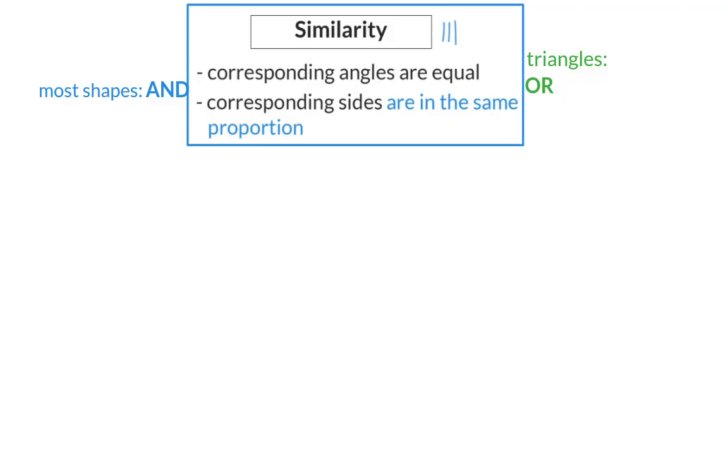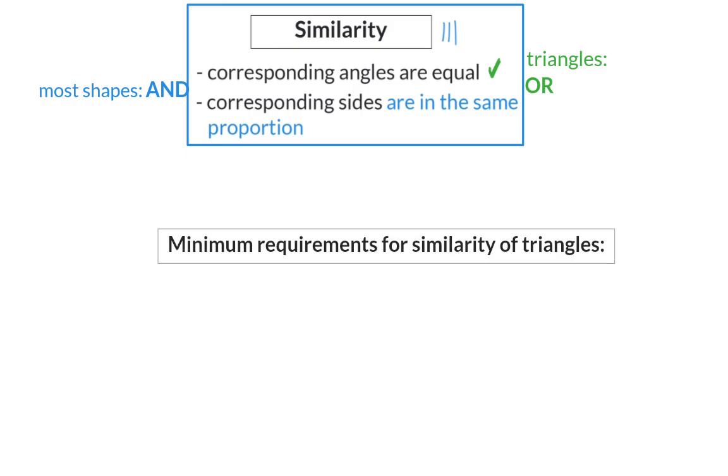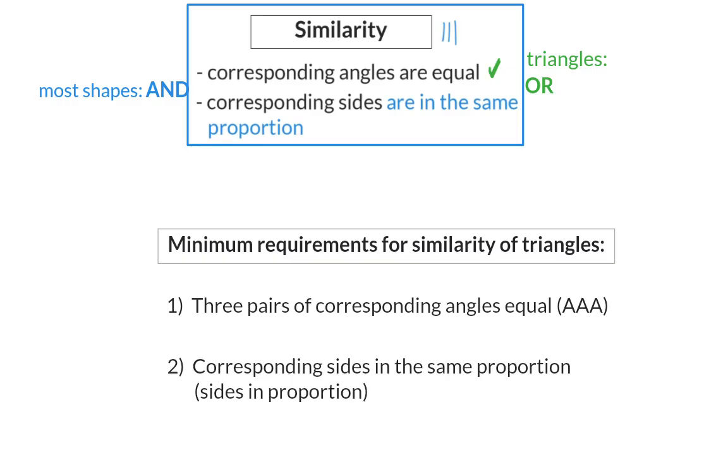So if you, for instance, know that the corresponding angles are equal, you can accept that the sides are in the same proportion or the other way around. This means that the minimum requirements for similarity of triangles will be three pairs of corresponding angles equal, or corresponding sides in the same proportion.